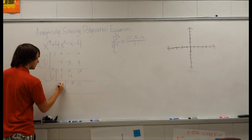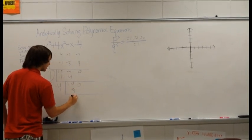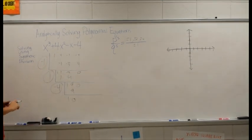Now let's try -4. Bring down the 1. 1 times -4 is -4. Comes out as 0. So these are your solutions.